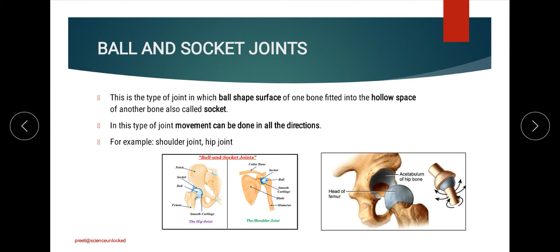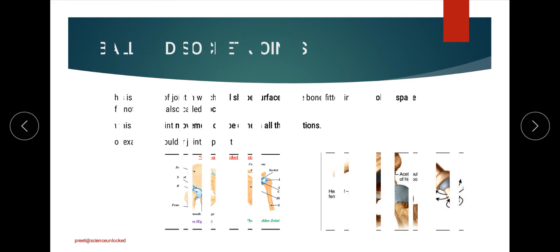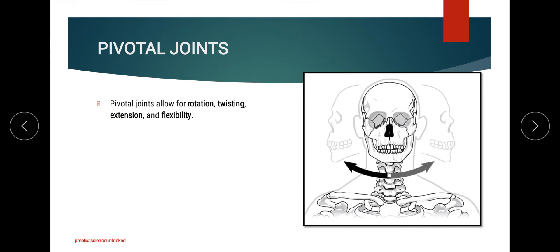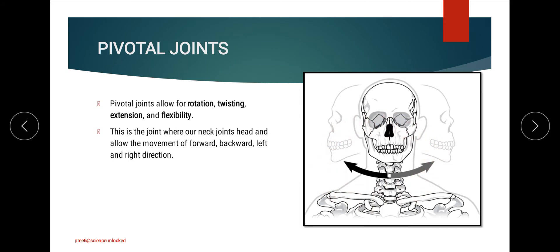The next joint is the pivotal joint, which is mainly responsible for rotation, twisting, extension, and flexibility. It is observed in the neck region, enabling the various movements of the neck. In this joint, a cylindrical structure is present inside a ring, and this ring-and-cylinder arrangement determines the directions in which the body part can move.